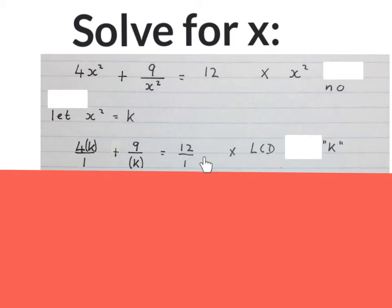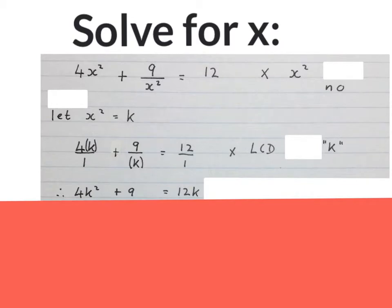Because this is an equation with fractions, I will times by the LCD, which is K. After you've timesed everything by K, you'll get 4K squared plus 9 equals to 12K.